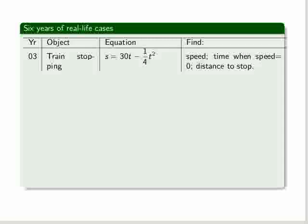In 2003, it was a train stopping. The equation was 30t minus a quarter t squared, and we were asked to find the speed, the time when the speed is 0, and the distance to stop.